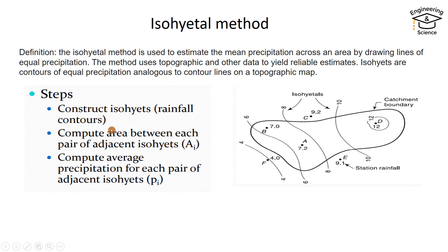Steps: First, we have to construct isohyetals, that's rainfall contours.